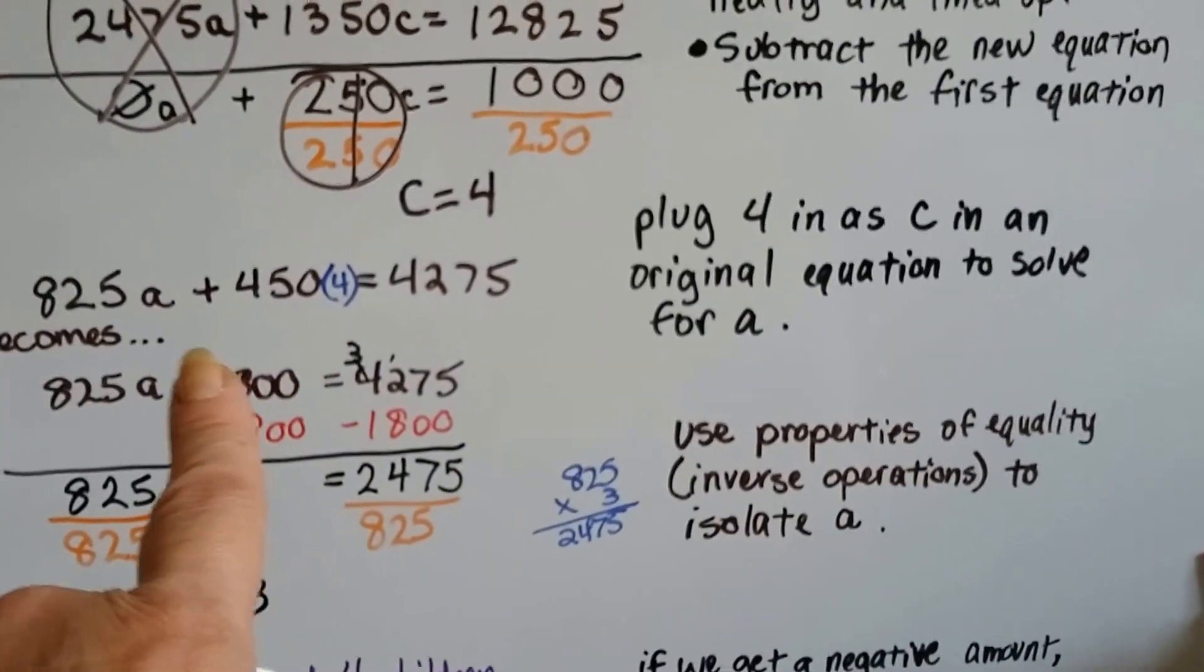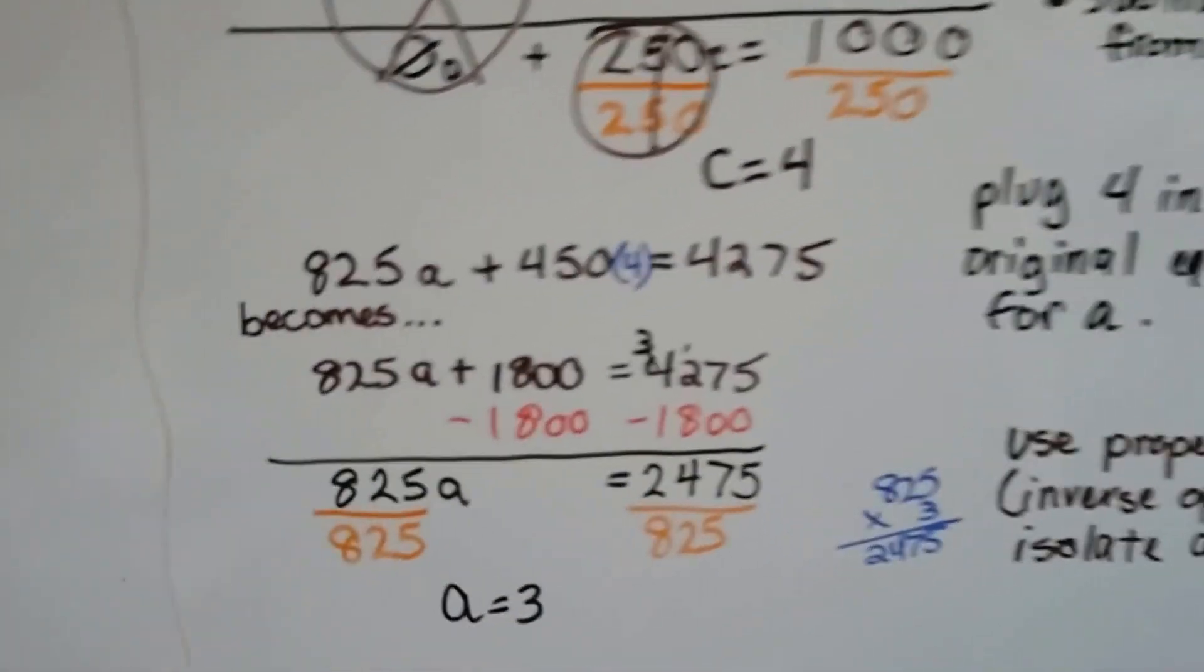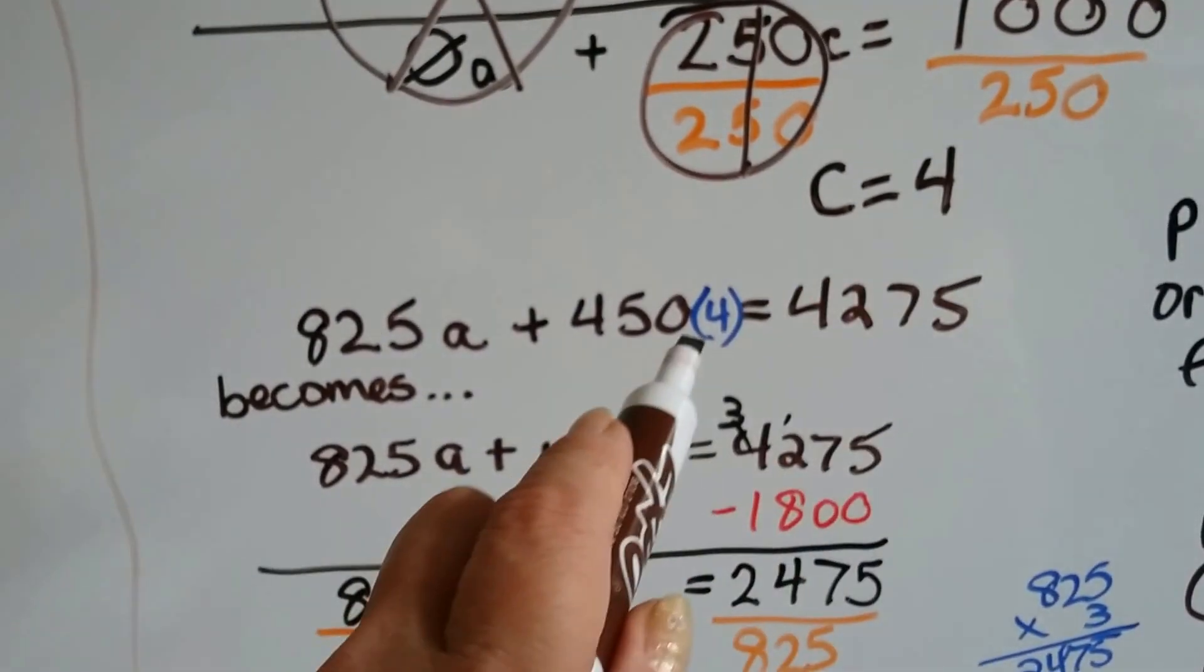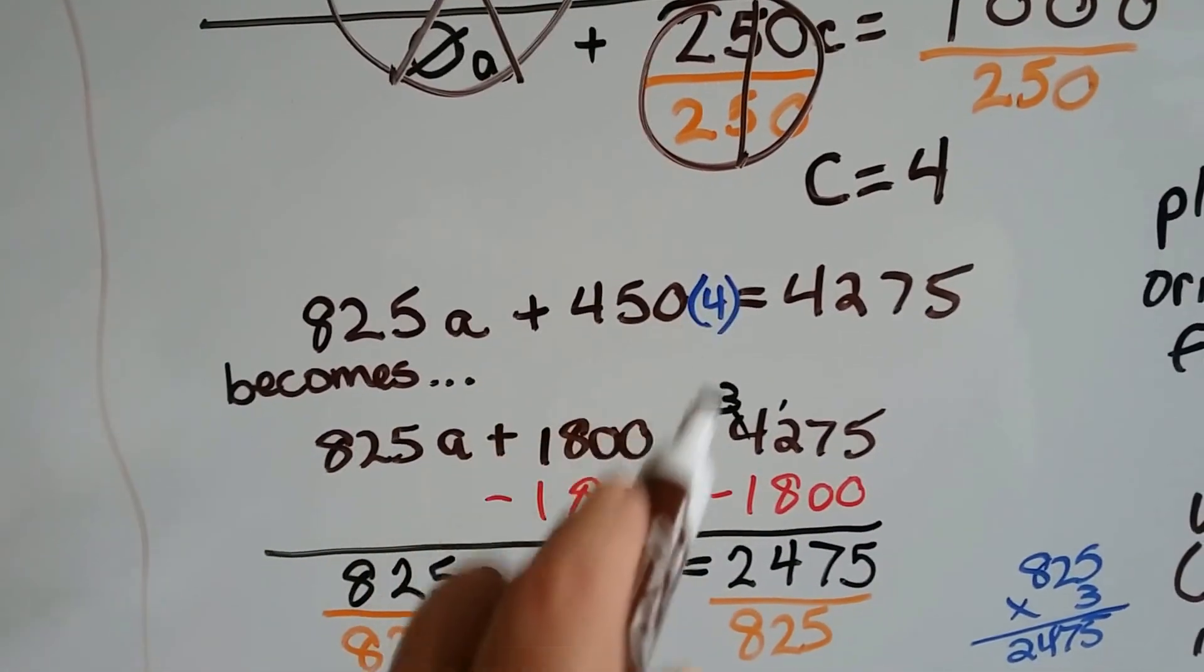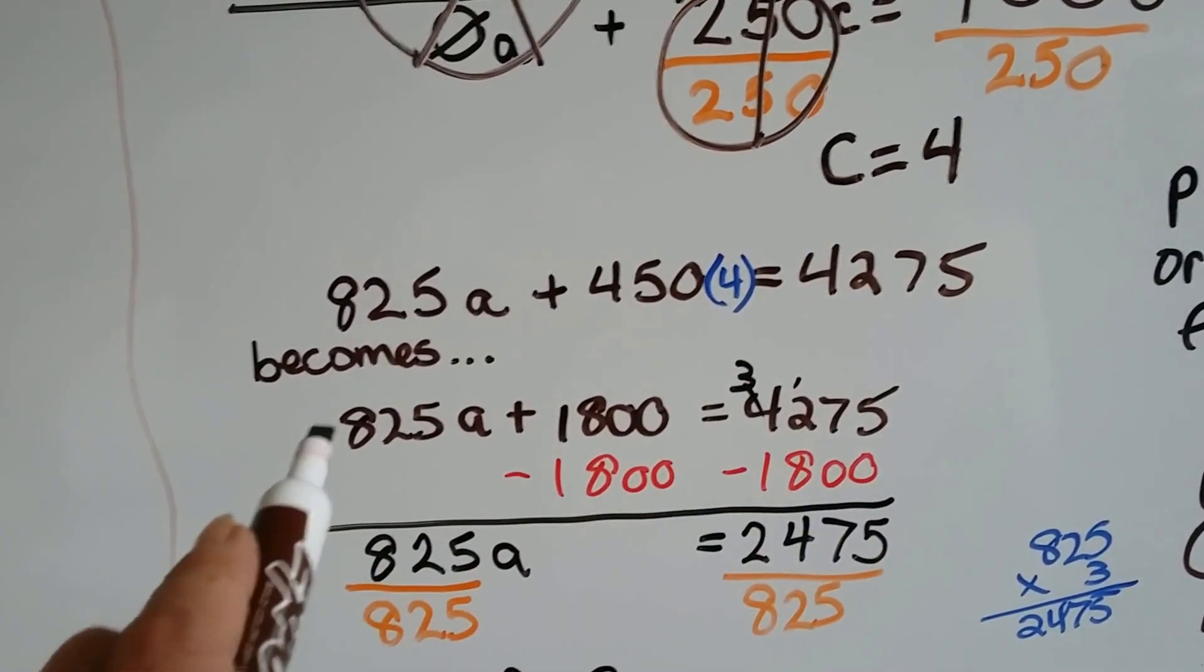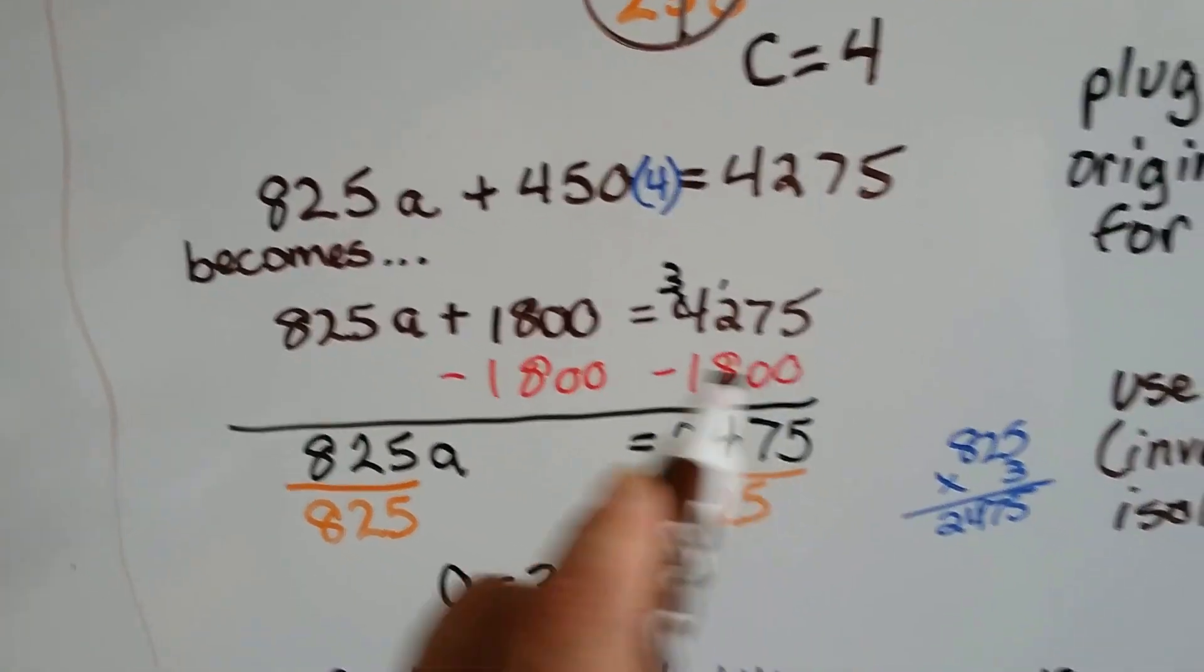Now we can plug this 4 in as the C in an original equation to solve for A. We had 825A plus 450C. Well, that's going to become a 4, and 450 times 4 is 1800. So our new equation is 825A plus 1800 equals 4,275.